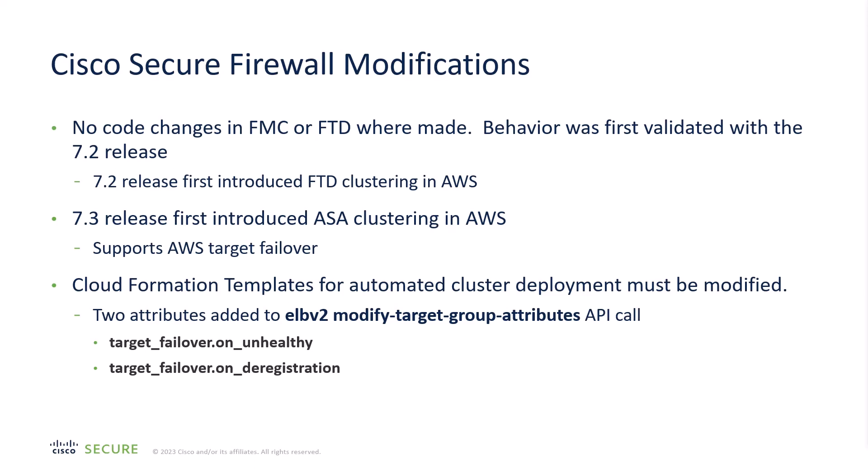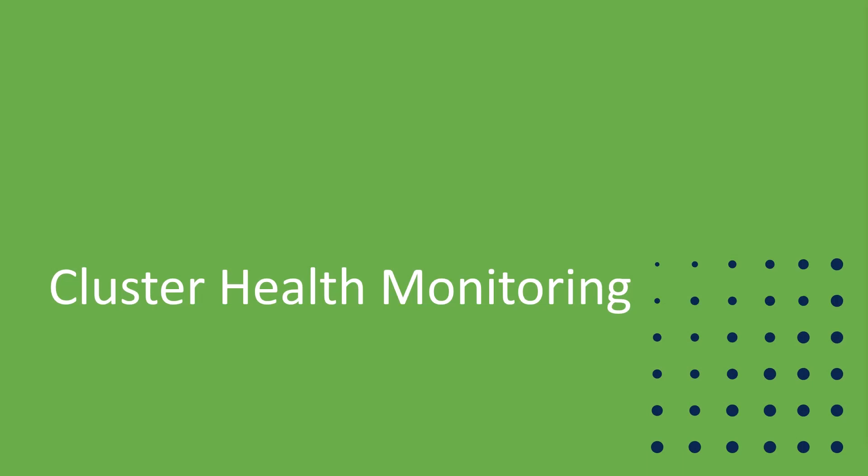In 7.3, we extended clustering in AWS to our ASA version of the Cisco Secure Firewall. Since it's the same clustering technology, it automatically supported the AWS target failover. There is a challenge with automation, however, because your CloudFormation templates and any Python scripts you wrote will probably not enable these attributes — they're disabled by default. If you drill down, you'll see there are two attributes: one for how you deal with unhealthy hosts and one for how you deal with hosts that are deregistered from the load balancer. You probably want to enable both in your automation.